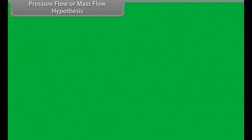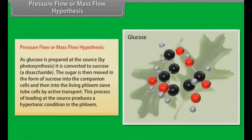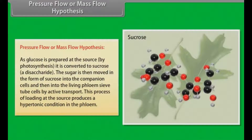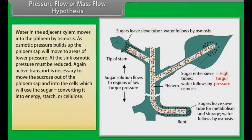Pressure flow or mass flow hypothesis. The pressure flow or mass flow hypothesis is the accepted mechanism used for the translocation of sugars from source to sink. Glucose is prepared at the source by photosynthesis and is converted to sucrose. The sugar is then moved in the form of sucrose into the companion cells and then into the living phloem sieve tube cells by active transport. This process of loading at the source produces a hypertonic condition in the phloem. Water in the adjacent xylem moves into the phloem by osmosis, and osmotic pressure builds up so that the phloem sap will move to an area of lower pressure.